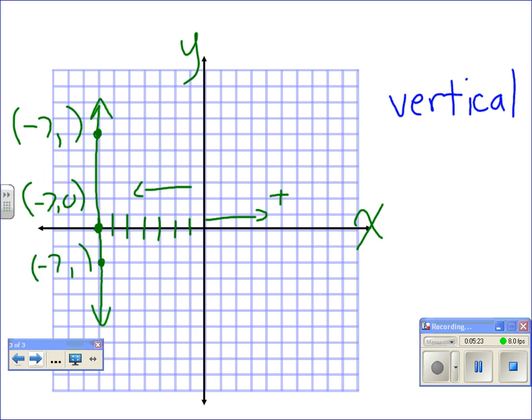And then the y value is going to change depending on where you are. So this would be a vertical line with the equation, x is always equal to minus 7.